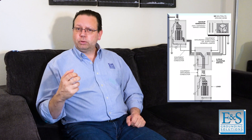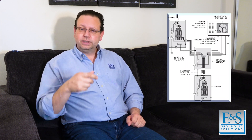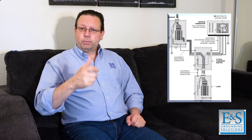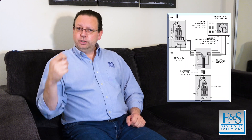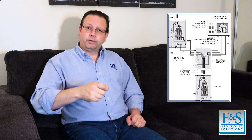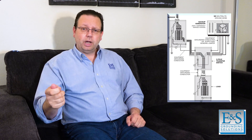Another place this happens is when you put in an automatic transfer switch. You have three-pole and four-pole transfer switches. In the case of a four-pole switch, you need a neutral-ground bond in the generator, but in a three-pole switch you do not. People get that mixed up, and all of a sudden you're allowing neutral currents to travel back on the ground system.